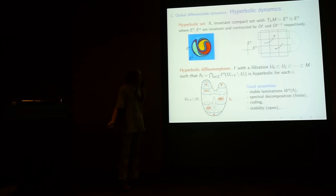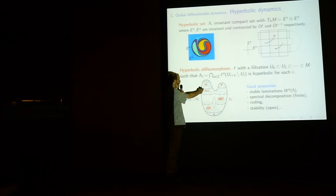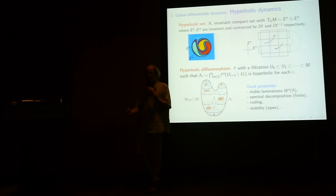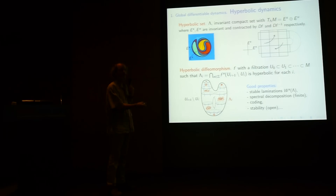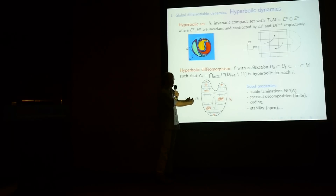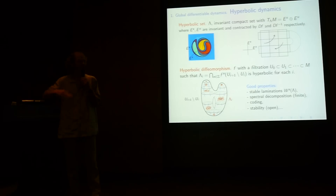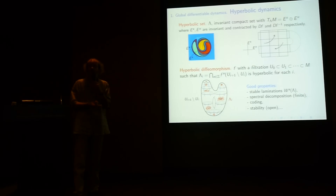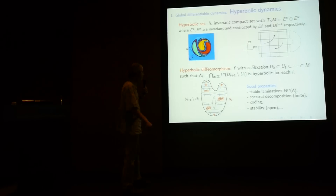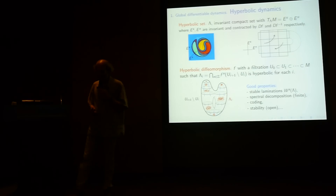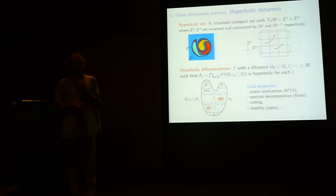This dynamics has good properties: we can split the dynamics, and there is a minimal way to split it where the number of pieces is finite. We call this a spectral decomposition. For each piece, the set of points which converge to it is a lamination — the stable lamination by stable leaves — and symmetrically in time we have the unstable lamination. The dynamics is stable under perturbation, so hyperbolic systems define an open set in the space of systems.